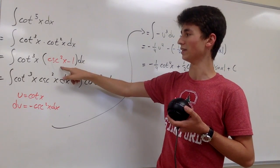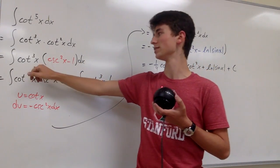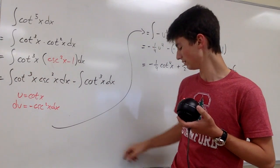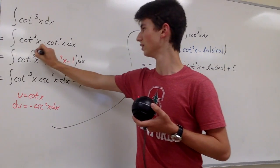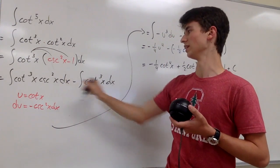And we can substitute it in, and then we will have cotangent cubed of x times that identity. And what we can do then is distribute this like so, and then split the integrals.